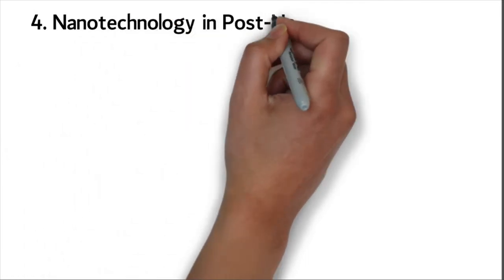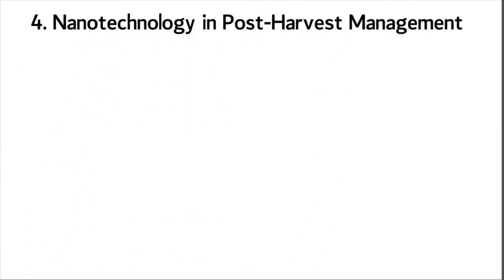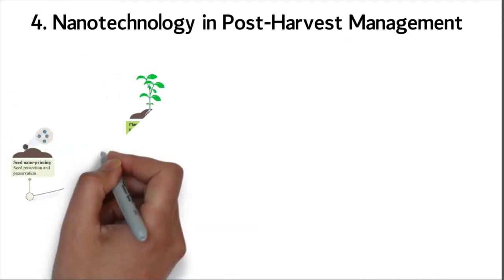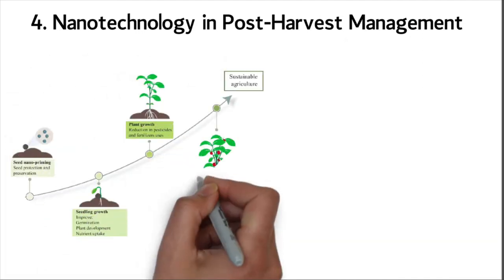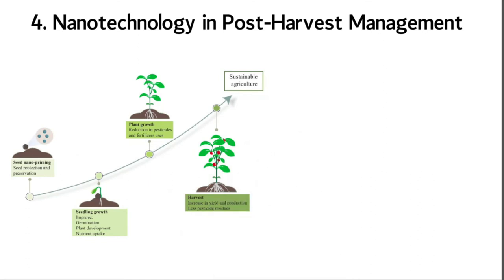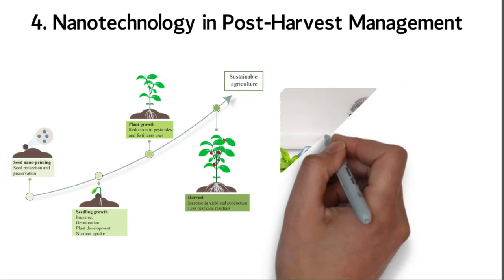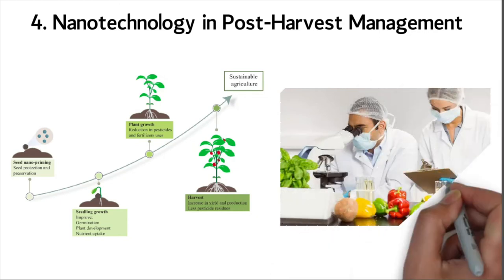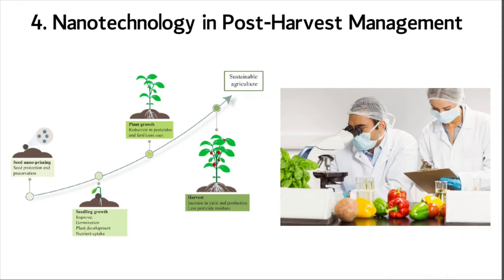Nanotechnology in Post-Harvest Management. Using nanomaterials, scientists are trying to make seeds last longer. This will help farmers after they've harvested their crops. New nanotechnology can help us keep food fresher longer. That could save people money or stop them from throwing away food they didn't finish eating.